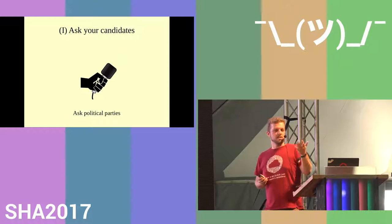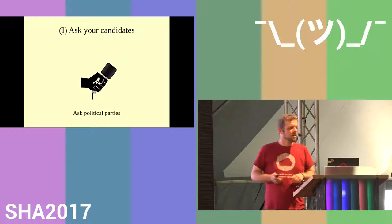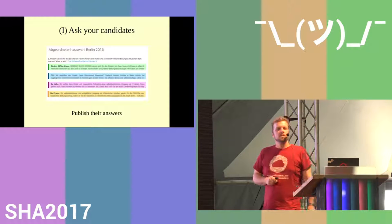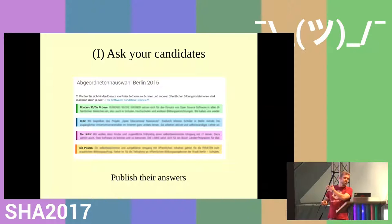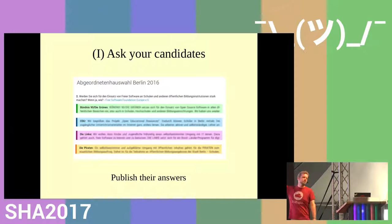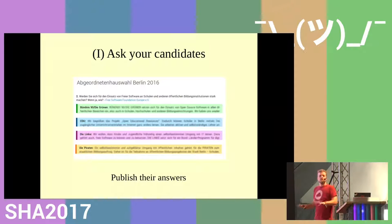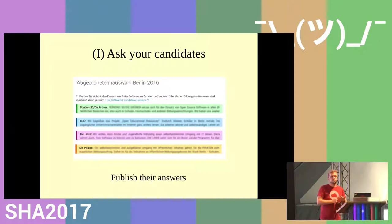You tell them that you are going to publish their answers. Once you have the answers back, you publish them. This is an example from the Berlin state elections — unfortunately it's in German. You can see on top the question and below the different parties giving their answers. This is the first step: the political parties had to respond, they had to think about the topic, and they are now aware there are people or organizations in favor of your topic.